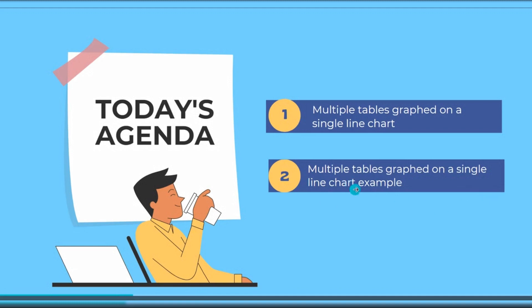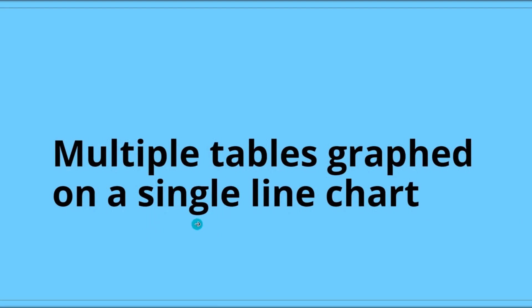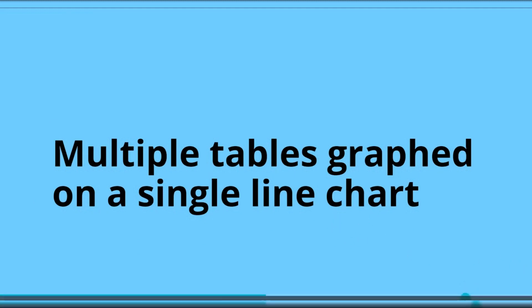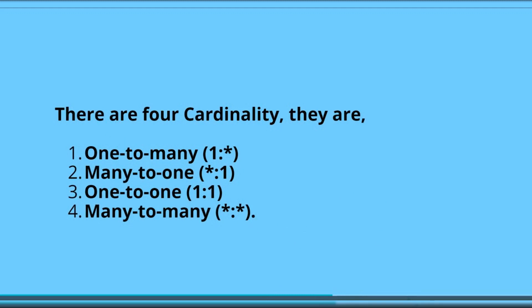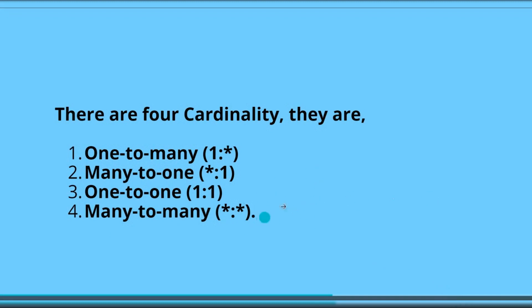I will show you an example of how we can display a single line chart with multiple tables. The first question that comes to mind is whether it is possible to display a single line chart with two different tables or multiple tables. The answer is yes — we can display a single line chart with multiple table values in the Power BI report using the line chart visual. Before that, we have to know about the relationships available in Power BI. There are four different cardinality relationships: one-to-many, many-to-one, one-to-one, and many-to-many. If we make a relationship between two tables, we can display a single line chart using two different table values.